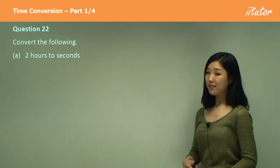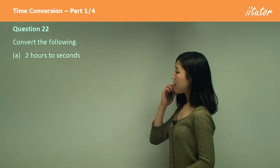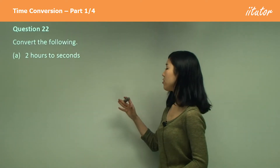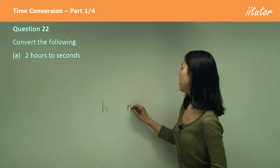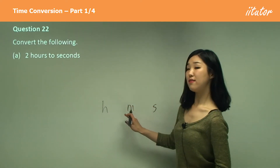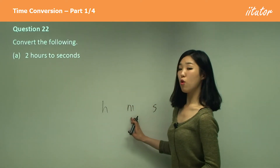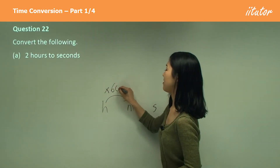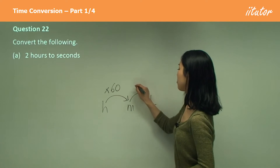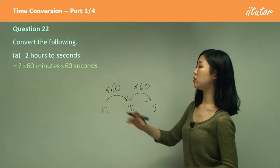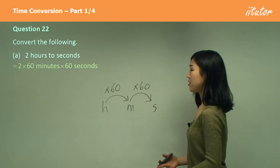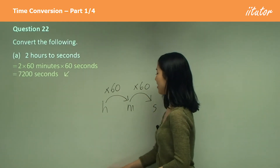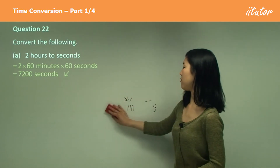Question 22: two hours to seconds. This time we're going to go through hours to minutes, then minutes to seconds. Hours to minutes is large to small, so we must multiply by 60. And then minutes to seconds, we multiply by 60 again. So we must multiply by 60 twice, which gives 7200 seconds. You can draw a little diagram like this if you ever get confused.